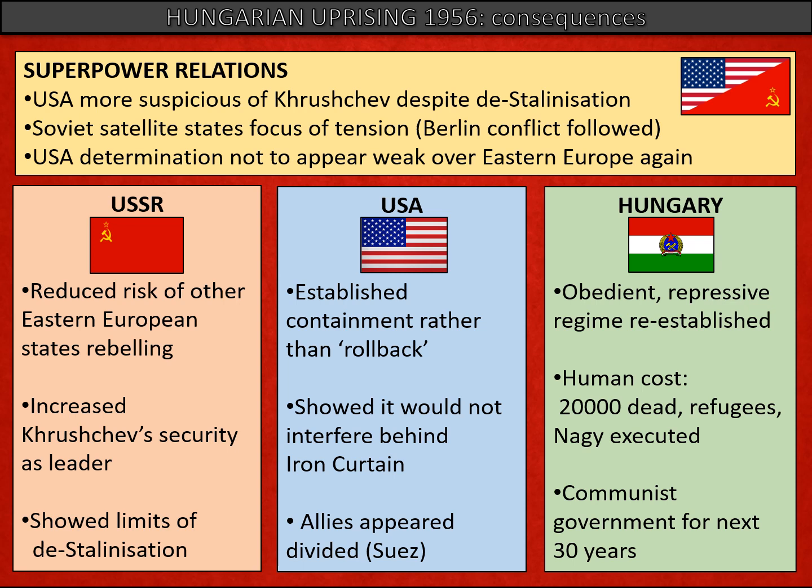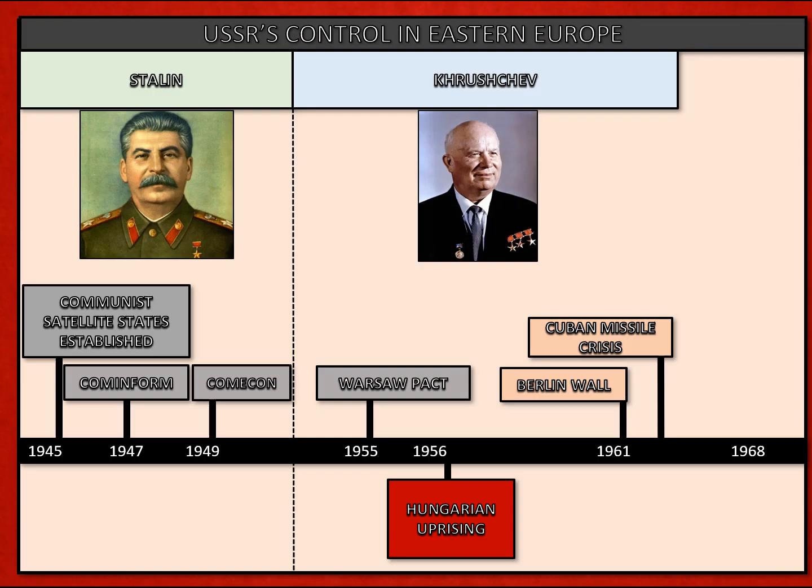There was a huge human cost too: nearly 20,000 dead. Imre Nagy himself was later taken out of the country and executed, and Hungary was placed under hardline communist rule for the next 30 years.